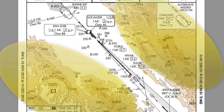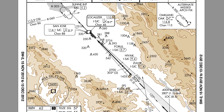The terrain depiction on the plan view of the approach chart is only shown in shades of brown if the terrain within the plan view is 4,000 feet above the airport elevation. So any terrain shown on the plan view that is above 4,000 feet above the airport will be shown in brown. Or if the terrain within 6 nautical miles of the airport reference point — that's where they measure the airport elevation — is at least 2,000 feet above the airport elevation.